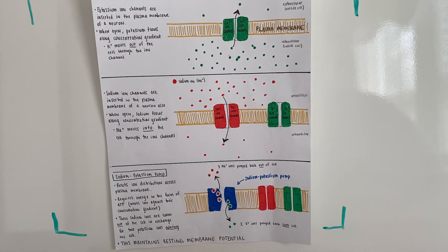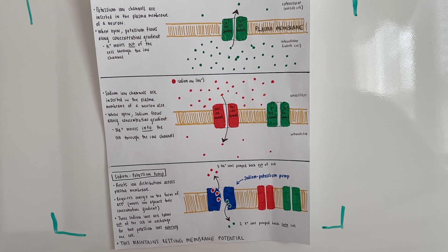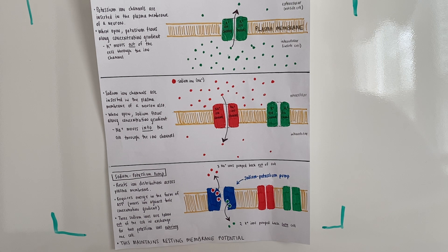We talked about the sodium-potassium pump when we covered chapter two. This is a form of active transport — it requires ATP, a form of energy. This ATP is being used by the pump because you are moving ions against their concentration gradient. Let's take a look at how the concentration gradients are established, and then we'll get into more detail about the sodium-potassium pump.